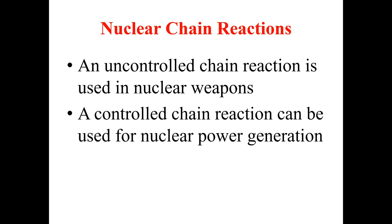There are two types of nuclear chain reactions. The first type is the uncontrolled chain reaction, which is essentially used in a nuclear weapon such as an atomic bomb. The second type is the controlled chain reaction, which is used in a nuclear reactor for power generation.